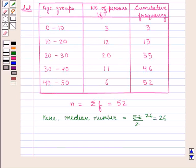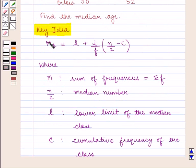Now, the cumulative frequency just greater than the median number, that is just greater than 26, is 35. Therefore, the corresponding class 20-30 is the median class.